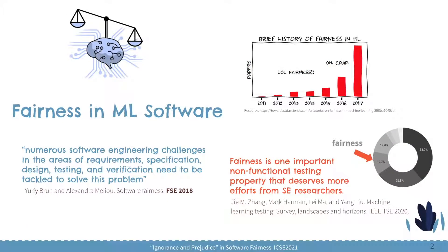Fairness is an important topic in machine learning software. In the machine learning community, we see this abrupt increase in the number of published papers about fairness. In the software engineering community, it is also widely acknowledged that lots of efforts are required from software engineering researchers — for example, in the requirements, specification, design, testing and verification to guarantee fairness in machine learning. Fairness is also one important non-functional testing property that deserves a lot of efforts from software engineering researchers.